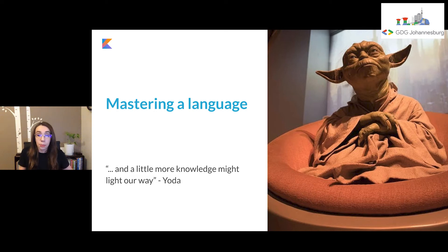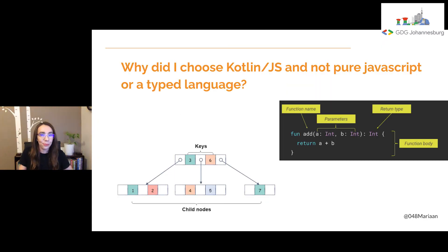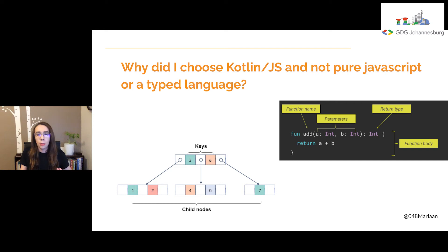I personally picked Kotlin as my mastering language, and I was really thrilled to find out that I can use it beyond just Android development. So why did I choose Kotlin JS for web and not pure JavaScript or a typed language? Firstly, Kotlin JS allows me to easily implement the programming fundamentals I was taught traditionally, and also explore it in an object-oriented way like C-sharp and Java, where instead of having the loosely typed JavaScript, it allows me to have a lot more structure and apply all the traditional concepts of programming.